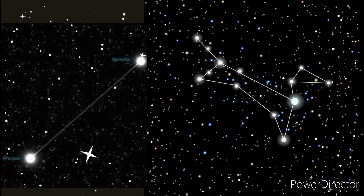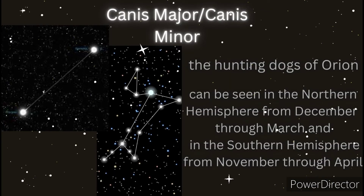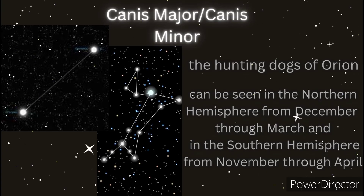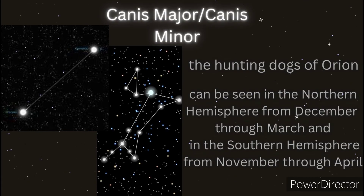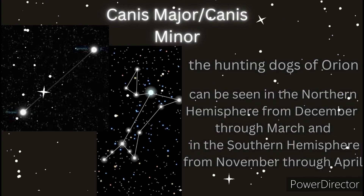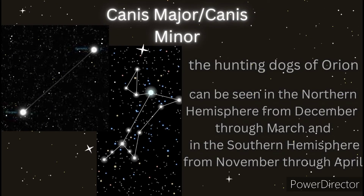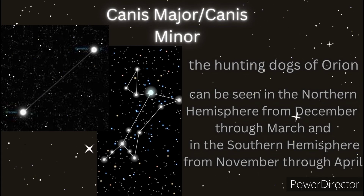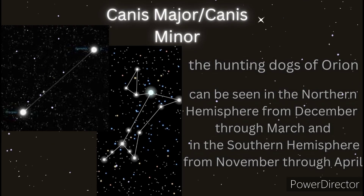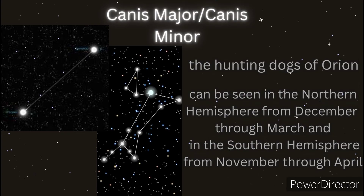Do you see a dog? These are Canis Major and Canis Minor — the hunting dogs of Orion. They can be seen in the northern hemisphere from December to March and in the southern hemisphere from November to April. Canis Major represents the bigger dog following Orion, while Canis Minor represents the smaller dog. Canis Minor is also known as Malara in Matigsalog Manobo, and is used by the Matigsalog Manobo of Bukidnon to interpret when to stop planting.